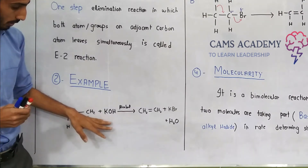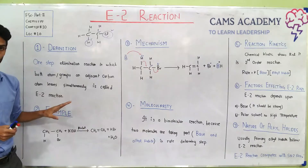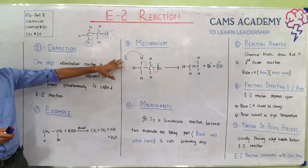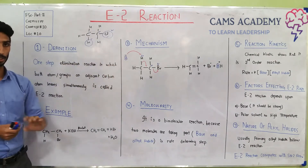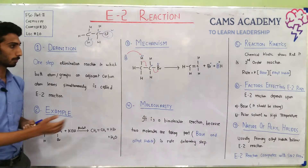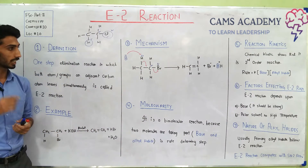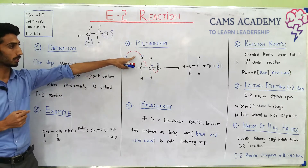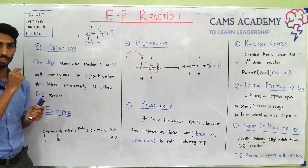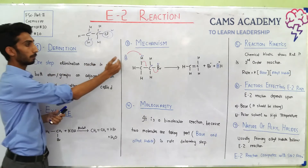For example, ethyl bromide undergoes an E2 reaction to give an alkene — two groups are removed: hydrogen from one carbon and bromine from the adjacent carbon. Now if we talk about the mechanism, we must understand the difference between a base and a nucleophile. A nucleophile attacks an electrophilic center.